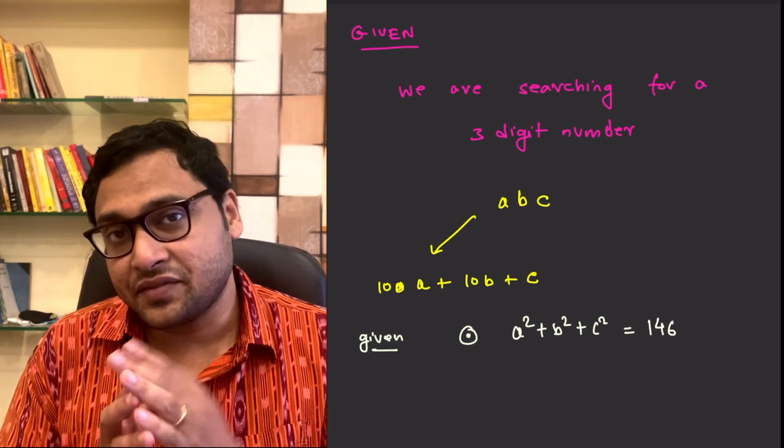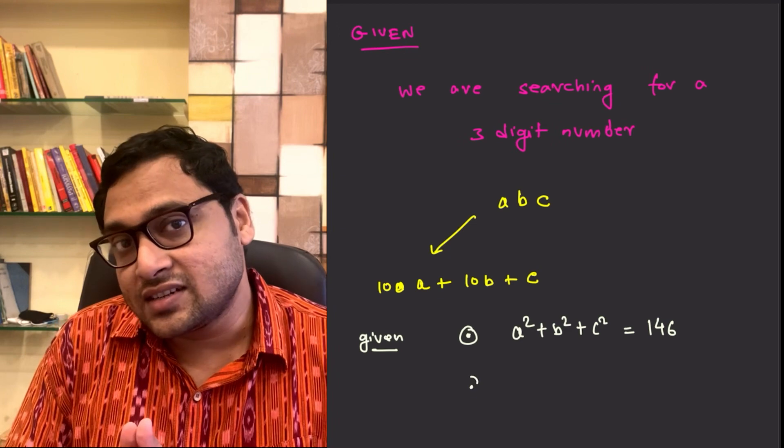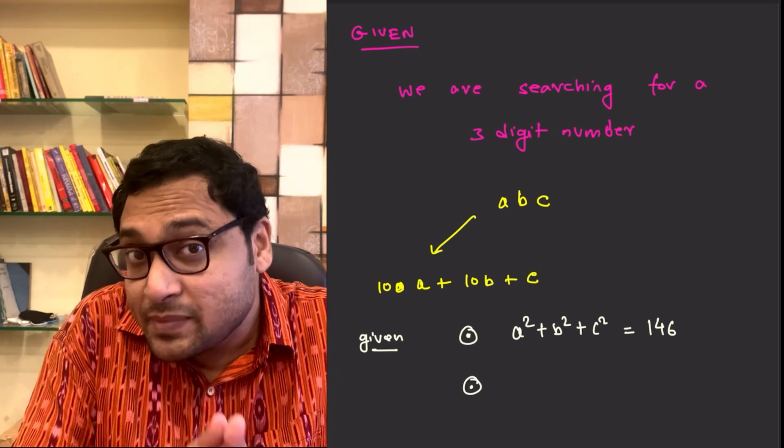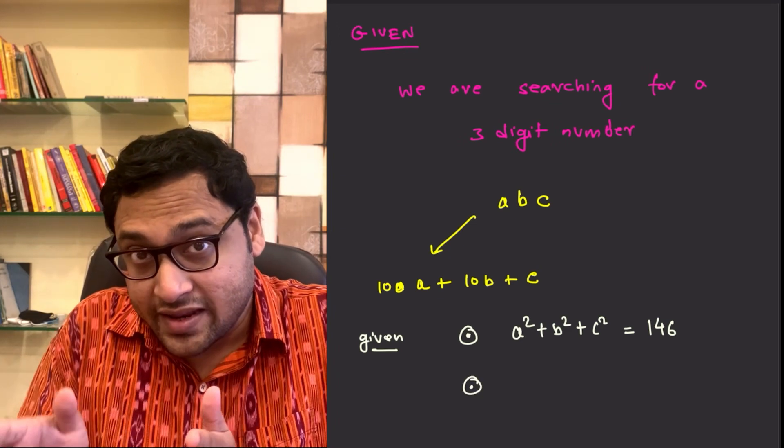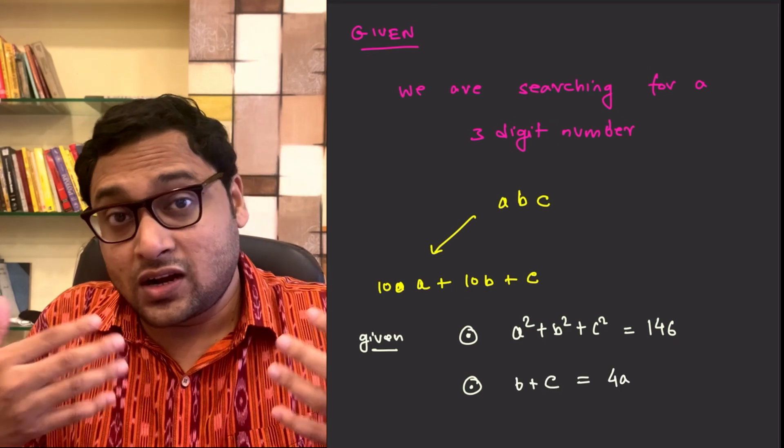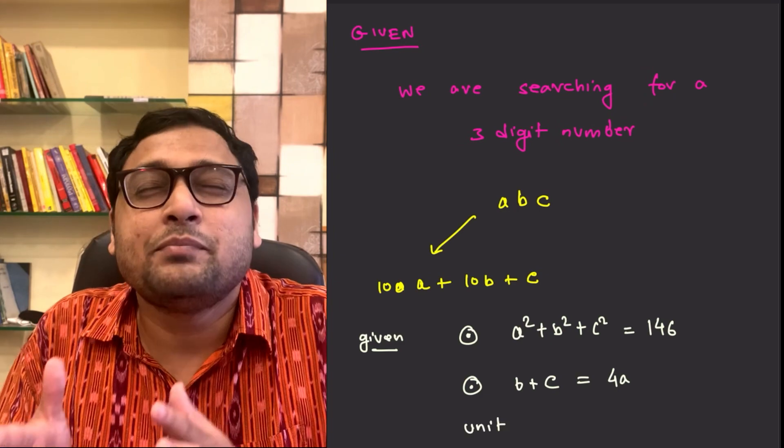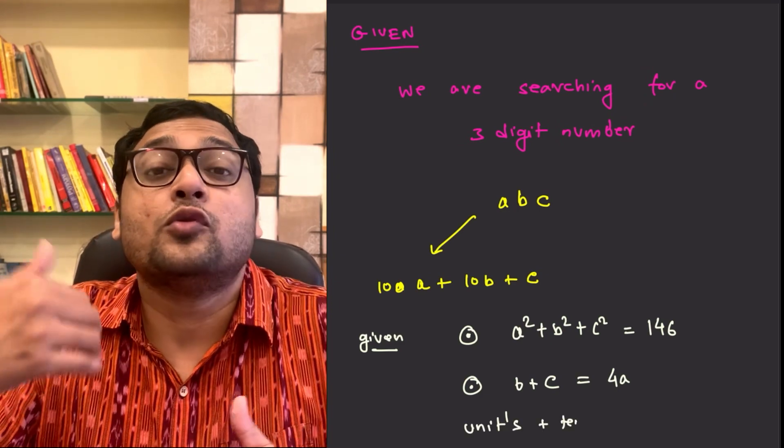The second thing that's given is that the units place digit and the tens place digit, in our case it's C and B, they add up to four times the hundredths place digit. So, C plus B adds up to four times A.